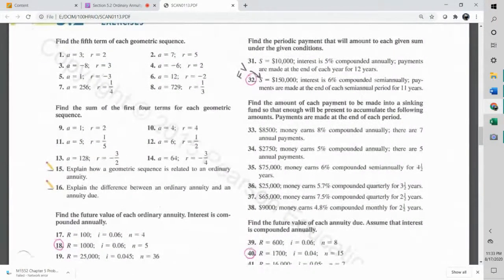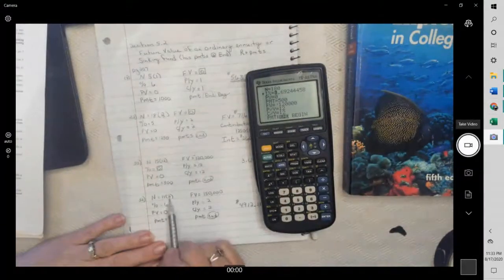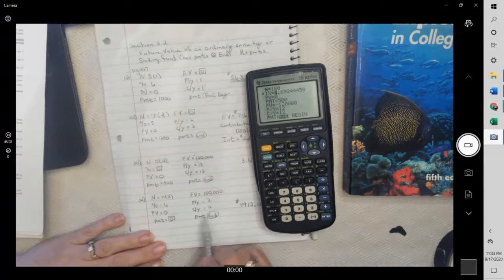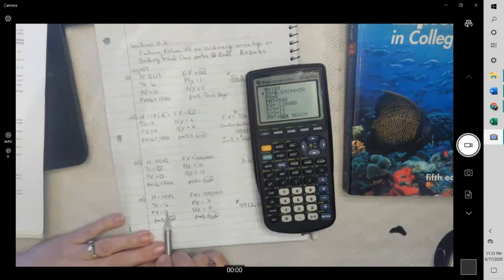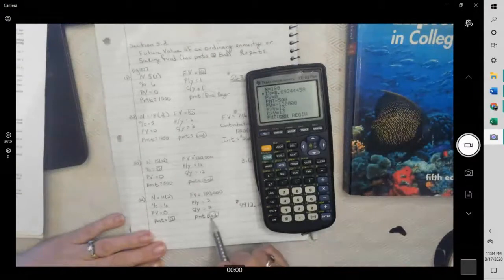Okay, number 32. We have a future value of $150,000. Interest is 6% compounded semi-annually, and payments are made at the end of each semi-annual period for 11 years. So we're going 11 years times payments per year, and we said that was semi-annually, so that's two, which means we're compounding also at two. We're looking for the payments. It's 6%. We don't have a present value, and our future value is going to be $150,000. And this says the payments were at the end.